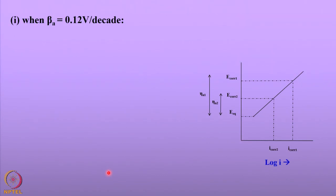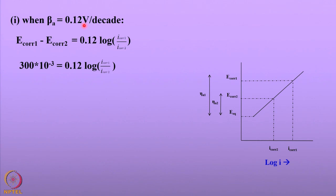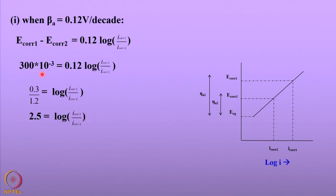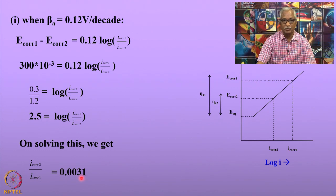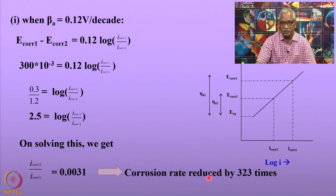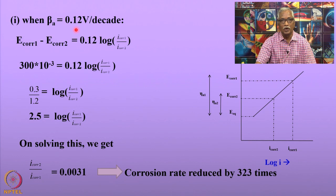With a Tafel slope of 0.12 volt per decade and a polarized potential of 300 millivolts (0.3 volt), substituting these values and solving gives a ratio of I_corr1 to I_corr2 of 0.0031. That corresponds to an increase in corrosion resistance by 323 times, should the Tafel slope be 0.12 volt per decade.